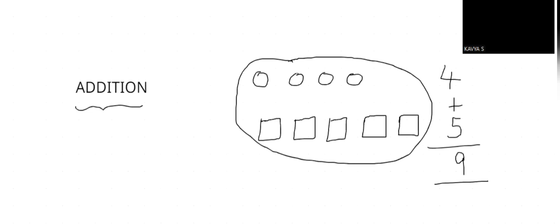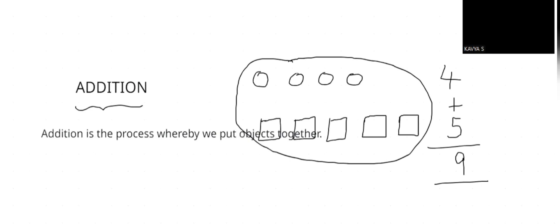So this is addition. Let me write the definition here. Addition is the process whereby we put objects together. It can be any sort of objects. Now let's move on to the next part, which is the properties of addition.